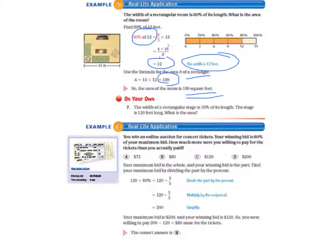And example six, another real-life application. You win an online auction for concert tickets. Your winning bid is 60% of your maximum bid. How much more were you willing to pay for the tickets than you actually paid? So it says that your winning bid was $125. And it says your maximum bid is the whole, and your winning bid is the part. So whole and part. Find your maximum bid by dividing the part by the percent.